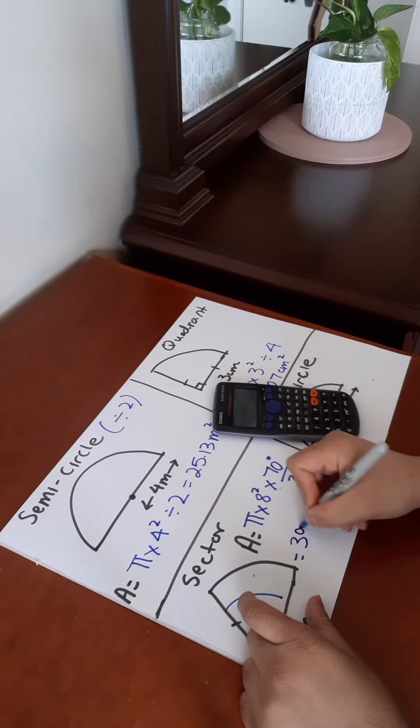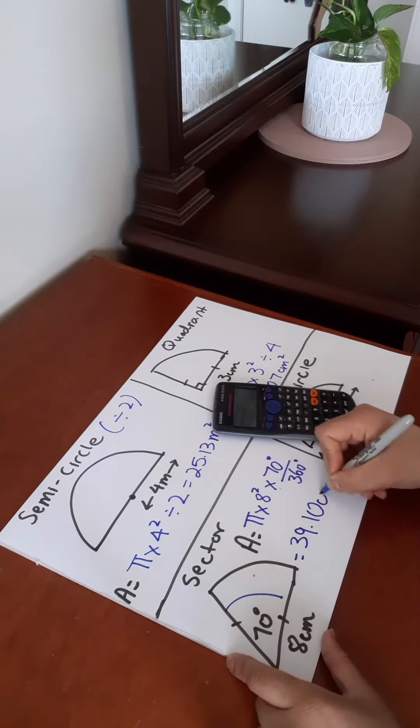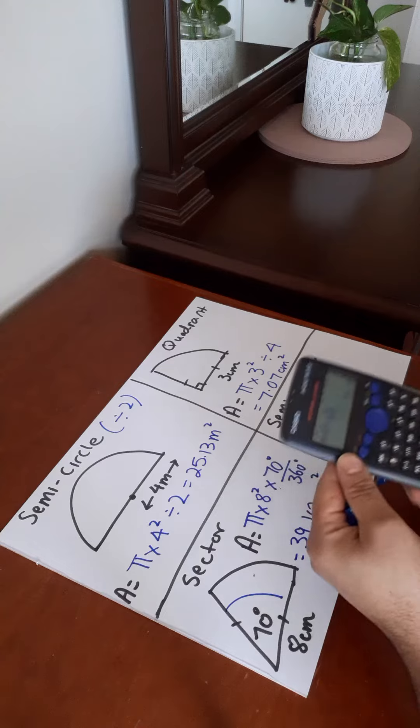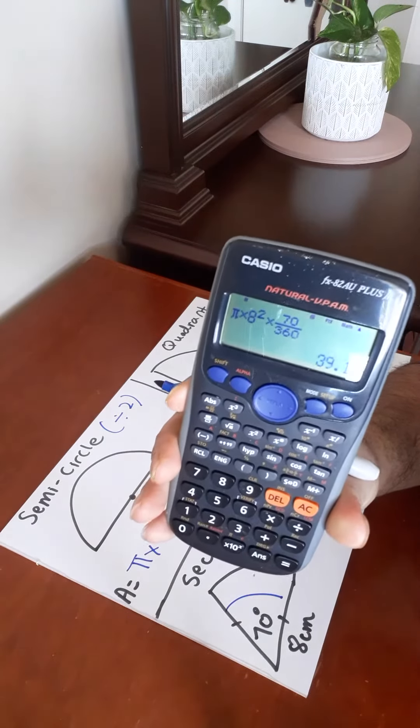And it gives me 39.10 centimeters squared. This is how I put it into the calculator, just like that, as you see it.